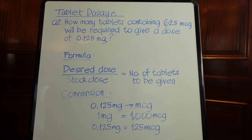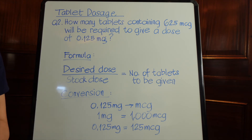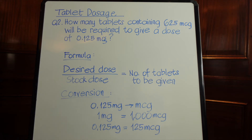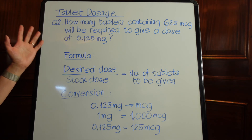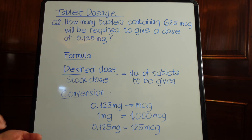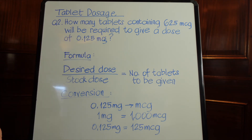We now go to the next tablet dosage question: how many tablets containing 62.5 micrograms will be required to give a dose of 0.125 milligrams? Going back to step one — know your numbers and identify what is being asked. Reading the question gives us an overview of which formula to use, what to calculate, and the unit of measurement being asked.